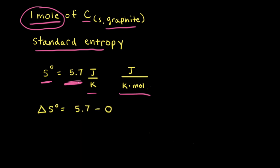The standard molar entropy of graphite is positive because it is being compared to a hypothetically perfect crystal of graphite at zero Kelvin. So really it represents a change in entropy — 5.7 minus zero — but when we write standard molar entropies we don't include the delta sign. We reserve the delta sign for processes such as phase changes or chemical reactions.